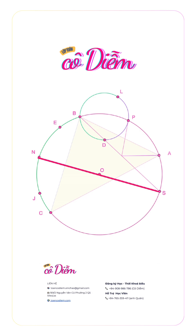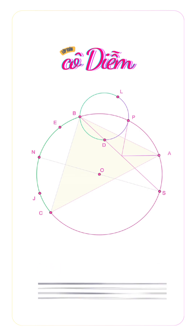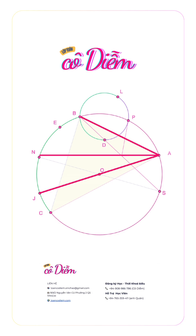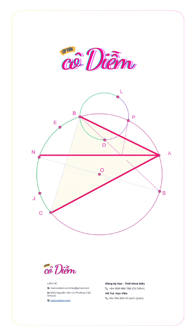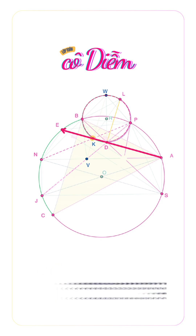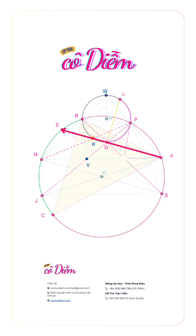Denote AJ and SN as diameters of circle omega. It can easily be said that angles ASJ, AJ, NS, AN all equal 90 degrees, and AN is the internal angle bisector of angle BAC. Let K be the second intersection, different from D, of line AE and circle gamma. Let PJ intersect AN at B.